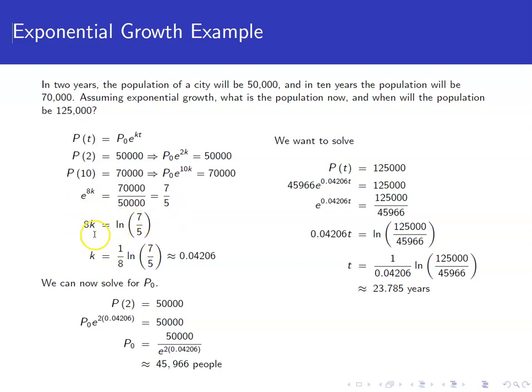Take the natural log of both sides, we get 8k equals the natural log of 7/5, and then divide by 8, and we get that k is approximately 0.04206.